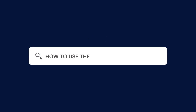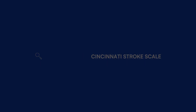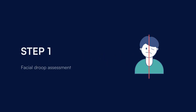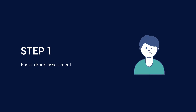To use our free Cincinnati Stroke Scale, follow these steps. Download our Cincinnati Stroke Scale from the CarePatreon platform, which you can find in the link in the description. Check the patient's face for any asymmetry and ask them to smile or show their teeth. Note any sagging or drooping on one side of the face.